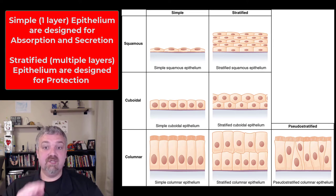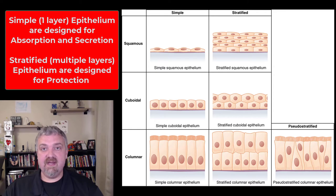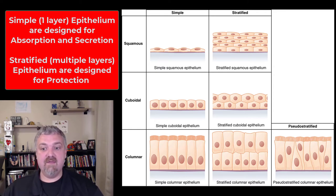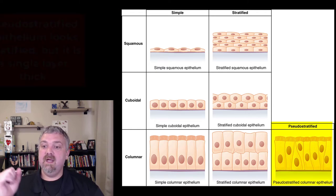Simple squamous would be a single layer of these fried egg-looking cells. Stratified squamous would be multiple layers of those cells, all the way down the line.